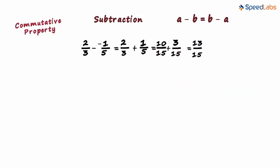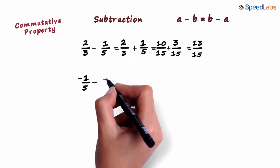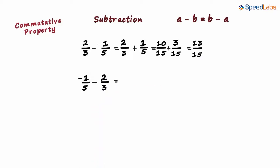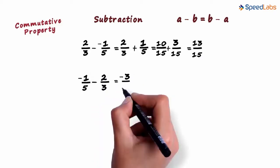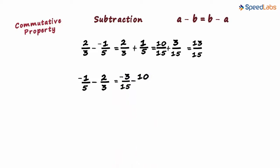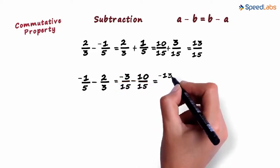Now let's try minus 1 by 5 minus 2 by 3. This can be written as minus 3 by 15 minus 10 by 15. Subtracting the numerators over the common denominator, we get minus 13 by 15.